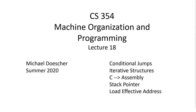Those three fundamentals are: the condition code register — that hidden register that keeps track of the result of every computation; the jump decision-making process, where jump commands take advantage of those condition codes, all kind of under the hood and hidden from us even as an assembly programmer; and finally, loops. Those are the things I'm really going to focus on today.